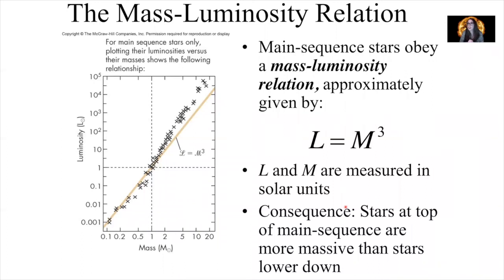There's also a relationship called the mass-luminosity relationship for a star. Main sequence stars obey this relationship, given approximately by L = M³, where L and M are measured in solar units — so one solar luminosity and one solar mass both equal 1. If you have a greater mass than our sun, you'll have a larger luminosity; if you have a smaller mass, you'll have a smaller luminosity. The consequence is that stars at the top of the main sequence of the HR diagram are more massive than stars that are lower down.